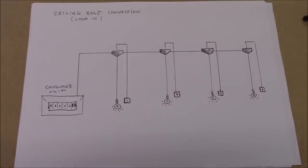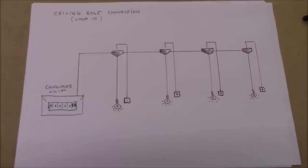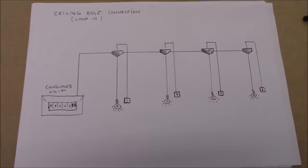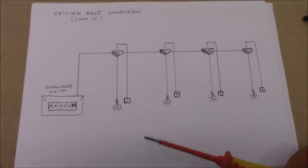Hi, welcome to my channel. In this video I want to talk about lighting circuits — basically one particular lighting circuit where everything is connected at the switch. Before I show you how to wire everything at the switch, I'm going to show you two other lighting circuits which are commonly used in the UK. The first one is the ceiling rose connection, also called the loop-in system.